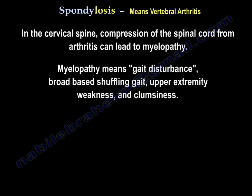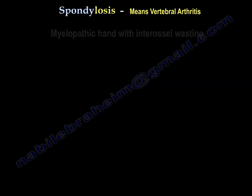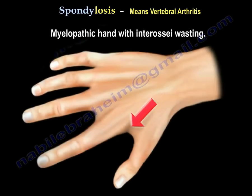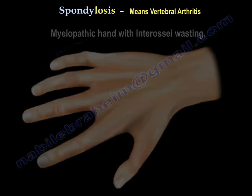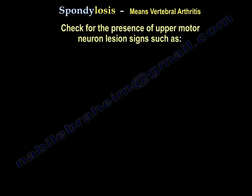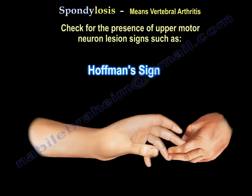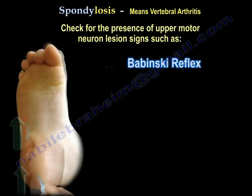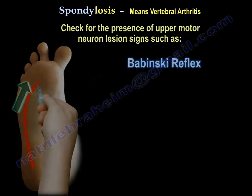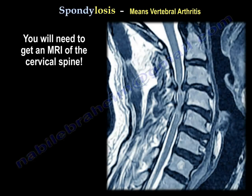Myelopathy means gait disturbance, broad-based shuffling gait, upper-extremity weakness and clumsiness. Myelopathic hand with interossei wasting, and upper motor neuron signs like the Hoffman and Babinski. You need to get an MRI of the C-spine.